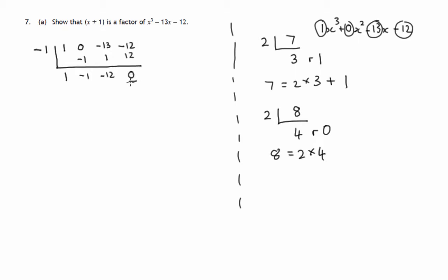Now what this means is that this cubic expression that we started with, that's 1x cubed, no x squareds, minus 13x minus 12, we can now say that it's x plus 1 times x squared minus x minus 12. And I'm reading that second result from these three numbers there, plus a remainder of 0.